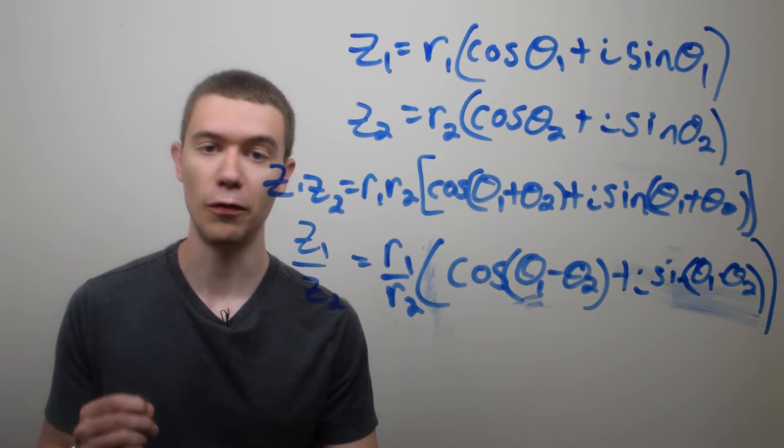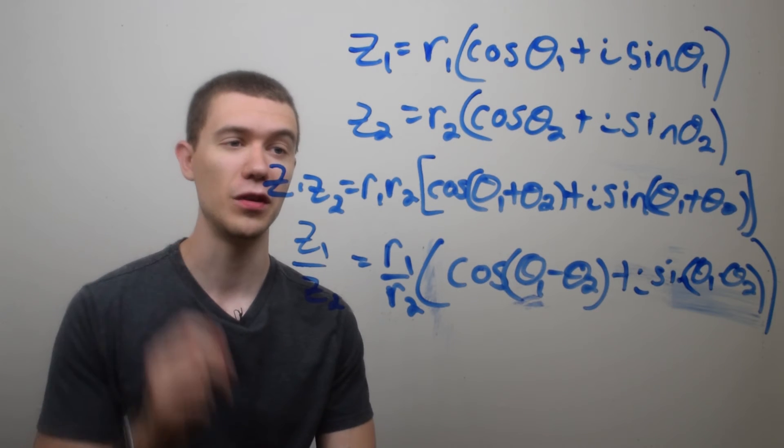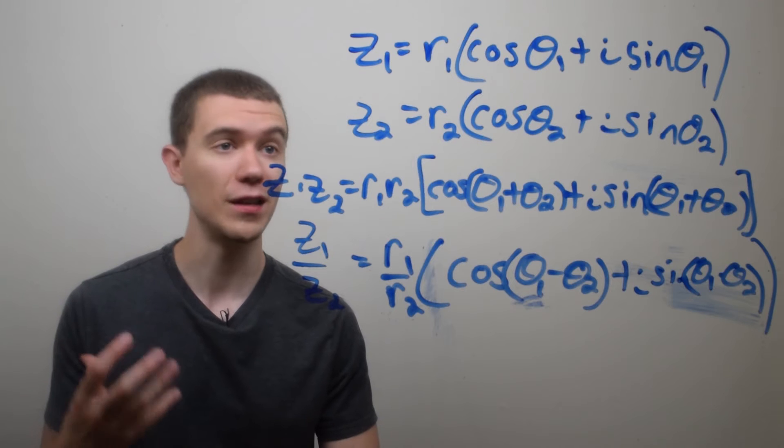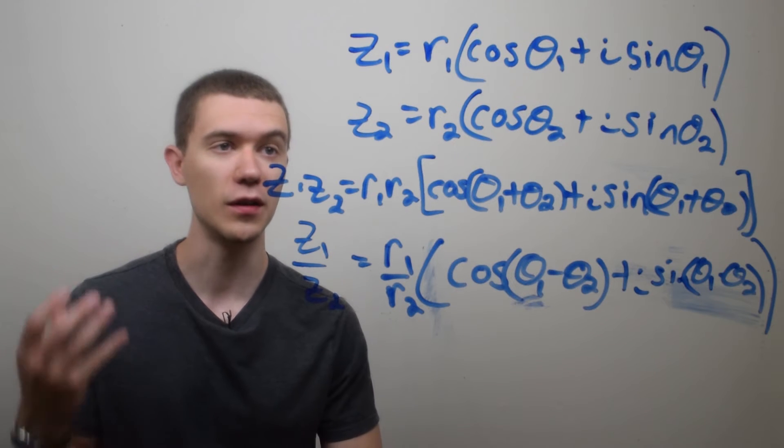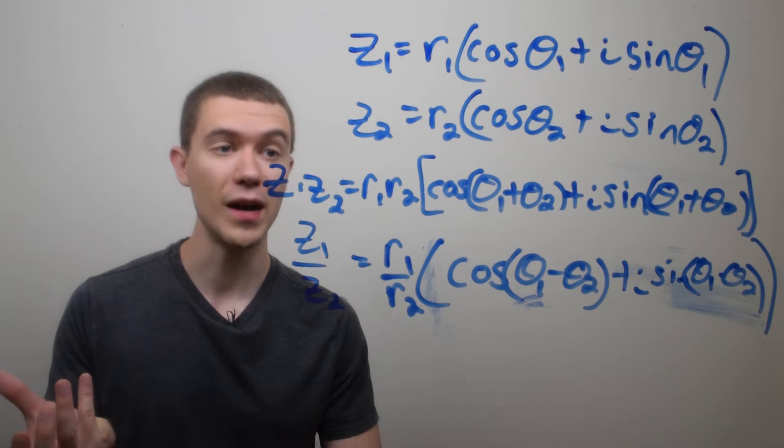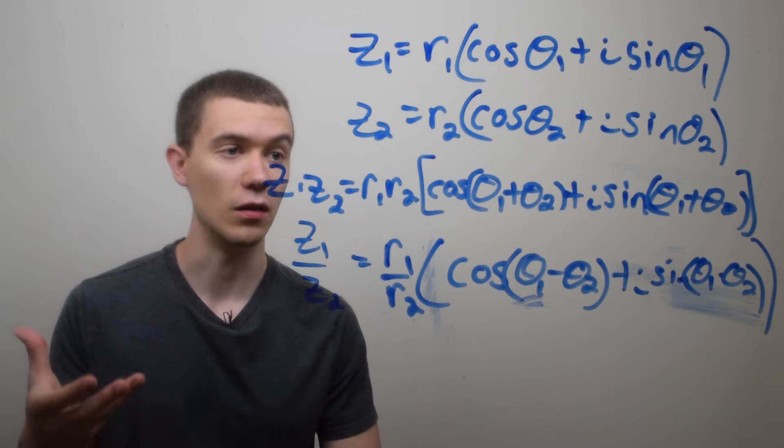When complex numbers are in their polar form, multiplication and division is very easy. So here I've written two general complex numbers in their polar form. The first one, z1, has a radius or modulus of r1 and an argument of theta1. z2 has a radius of r2 and an argument of theta2.